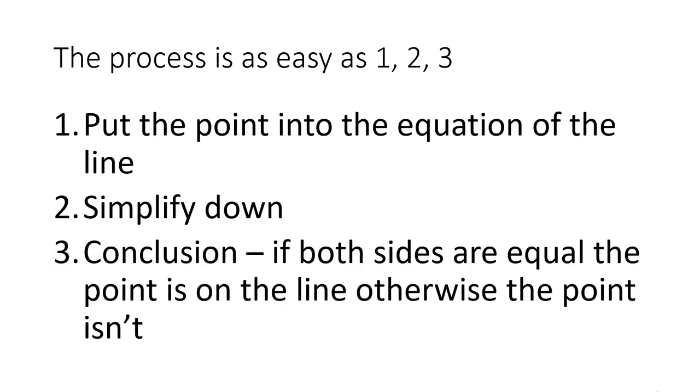The third step is to reach a conclusion. So the rule is, if both sides of the equation are equal, you get something like five equals five, then the point is on the line. Otherwise, the point isn't on the line. So when you simplify down, if you get five equals four, that's telling you it's not on the line, because if it was on the line, both sides of the equation would be equal.